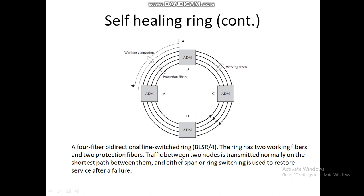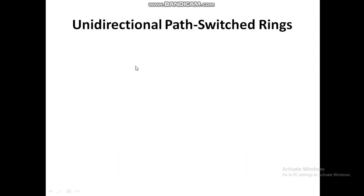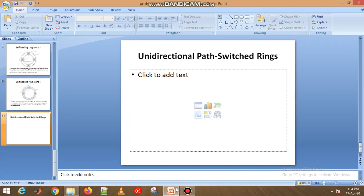Next is the bidirectional line switch ring. A four-fiber bidirectional line switch ring is called BLSR4. In this, working traffic is carried in both directions. The ring has two working fibers and two protection fibers. Traffic between two nodes is transmitted normally on the shortest path between them, and either span or ring switching is used to restore service after a failure.